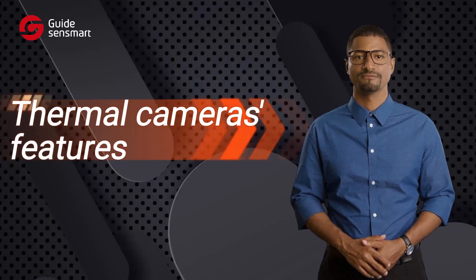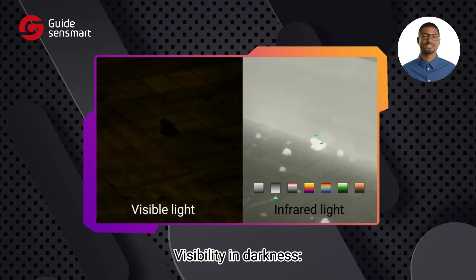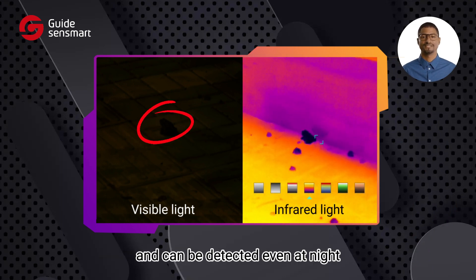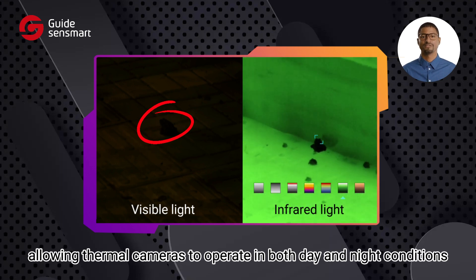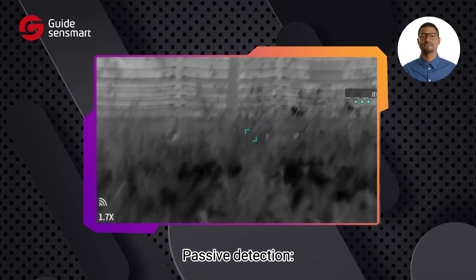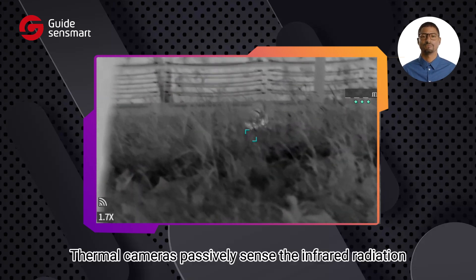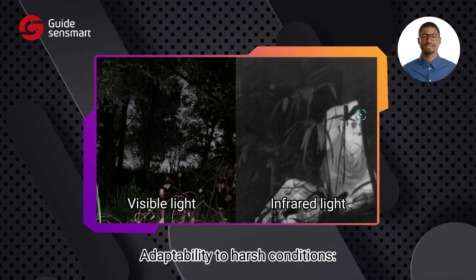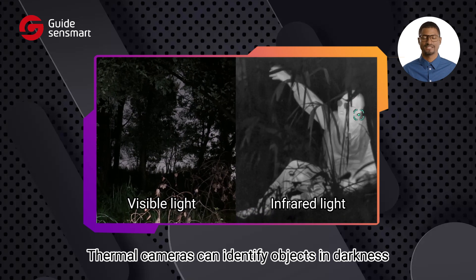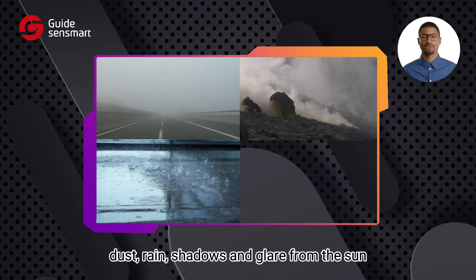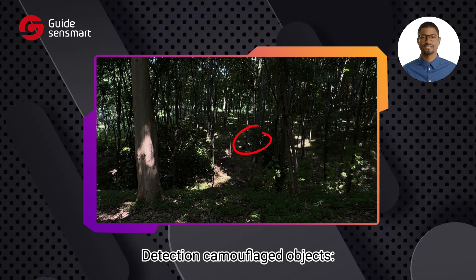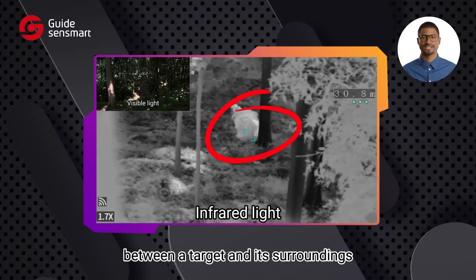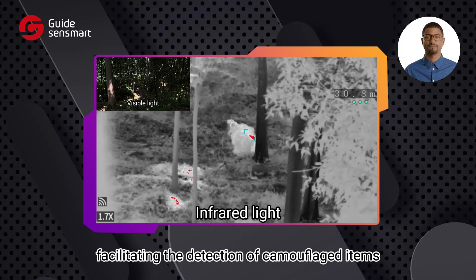But what makes them so remarkable? Here are some notable features. Visibility in darkness: infrared radiation is unaffected by visible light and can be detected even at night, allowing thermal cameras to operate in both day and night conditions. Passive detection: thermal cameras passively sense the infrared radiation emitted by objects. Adaptability to harsh conditions: thermal cameras can identify objects in darkness and penetrate through fog, dust, rain, shadows, and glare from the sun. Detection of camouflaged objects: thermal imaging captures the temperature differences between a target and its surroundings, facilitating the detection of camouflaged items.